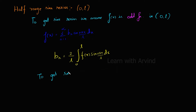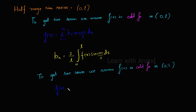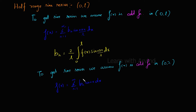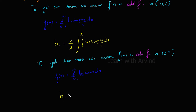To get the sine series, we assume f(x) is an odd function in the range minus π to plus π. The given function ranges between 0 and π, but we are assuming f(x) is an odd function in the range minus π to π — that's minus L to L in the general case. The Fourier series is given by f(x) equals summation n equals 1 to infinity of bₙ sin(nx), and bₙ equals 2 by π times the integral from 0 to π of f(x) sin(nx) dx.